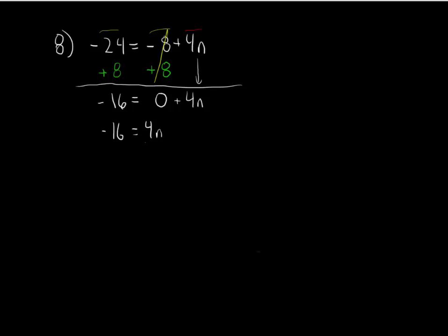Last step. 4 and n are married together with multiplication, so let's give them a divorce with division. 4 divided by 4 cancels out and becomes 1, leaving me with just a single n on the right. Negative 16 divided by 4 gives me negative 4 on the left. Final answer.